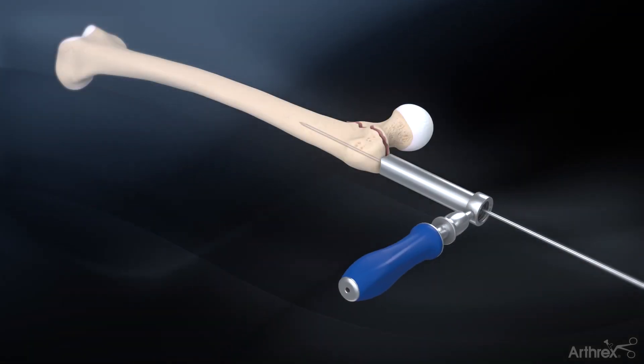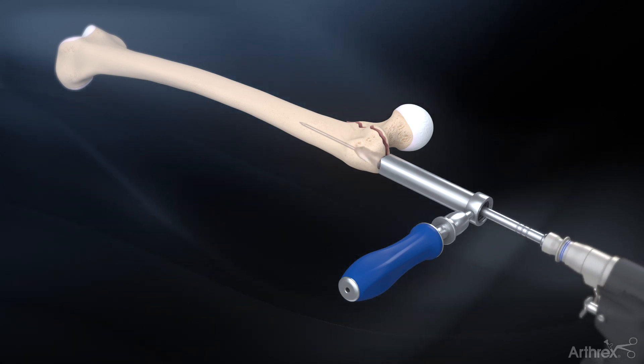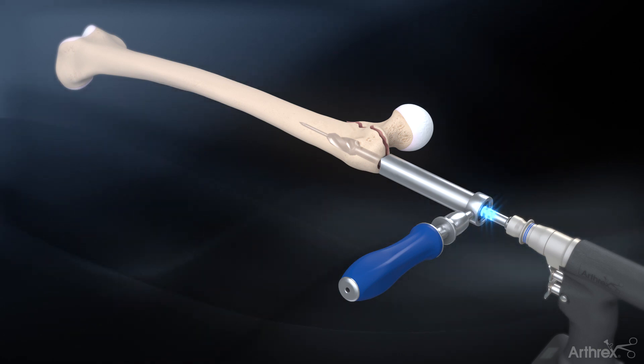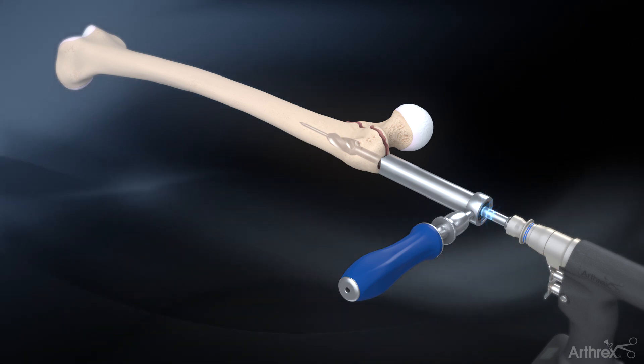Remove the black pin guide and ream over the guide pin with the 16.5 mm cannulated entry reamer. The entry reamer has grooves which are read from the top of the soft tissue protector. The grooves indicate the reaming depth needed to insert the nail flush, 5 mm, or 10 mm deep into the femur.